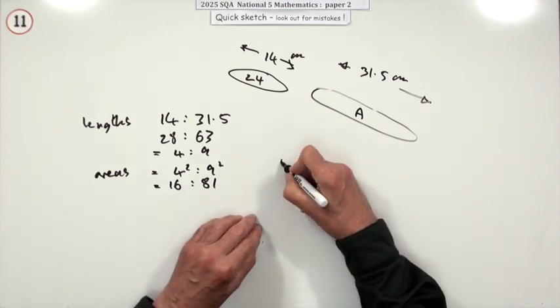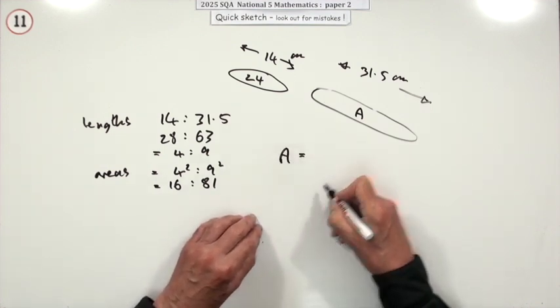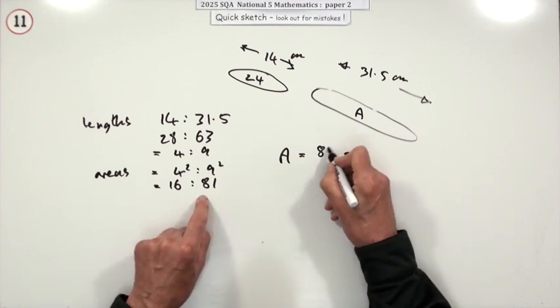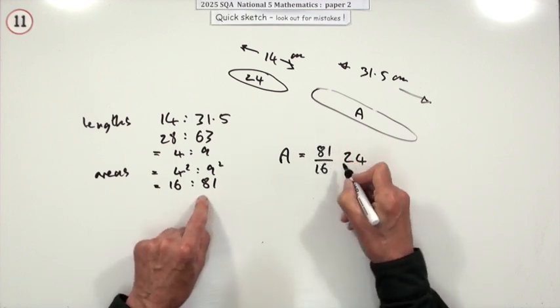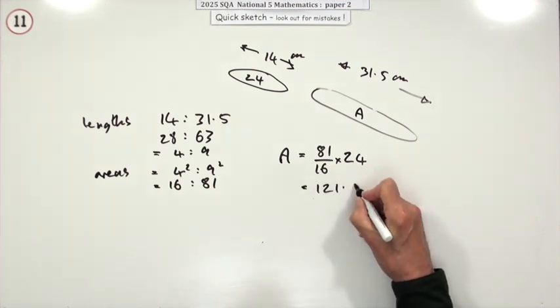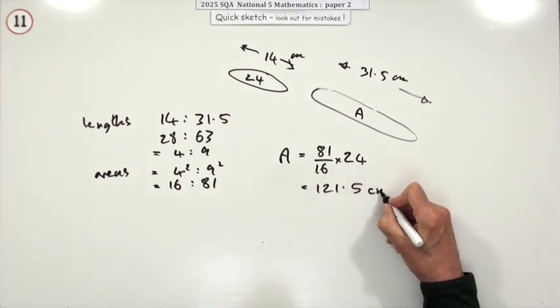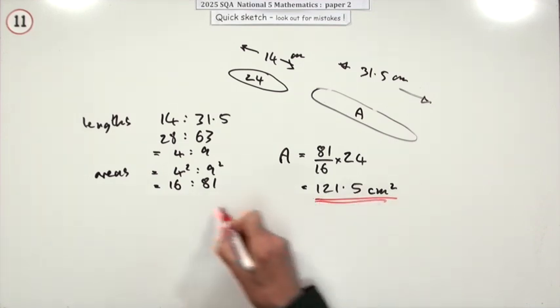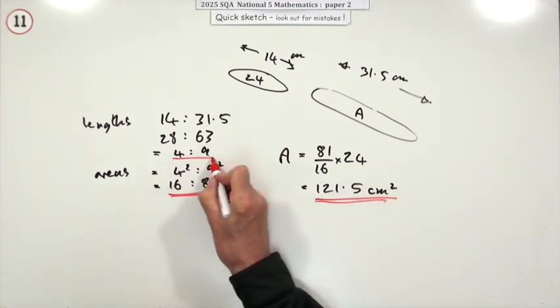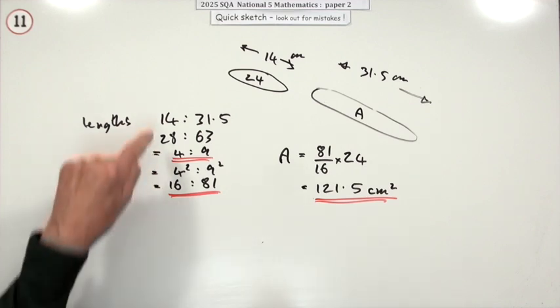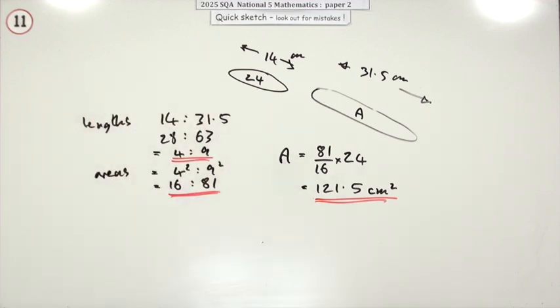Then it's just a case of, I want the area of the larger one. Well, how does that compare to the smaller one? It's got to be bigger. So I'll put the 81 on top and the 16 underneath. And that gives you 121.5 centimeters squared. I don't know if you need to go to whole numbers there, or whether you could have just stuck with the originals.